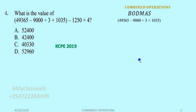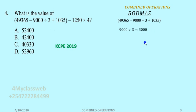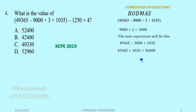With our BODMAS rule, we deal with the bracket first. Inside the bracket we have 49,365 minus 9,000 divided by 3, then add 1,035. According to BODMAS, we do not have 'of', so we go straight to division: 9,000 divided by 3 equals 3,000. The new expression inside the bracket becomes: 49,365 minus 3,000 plus 1,035.